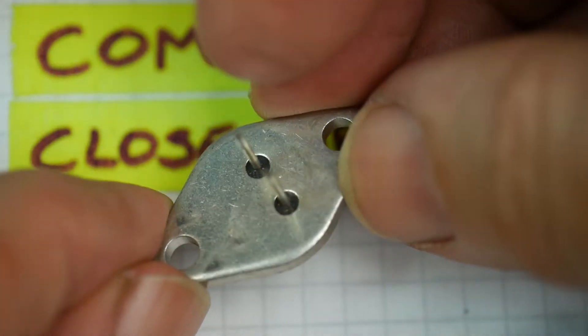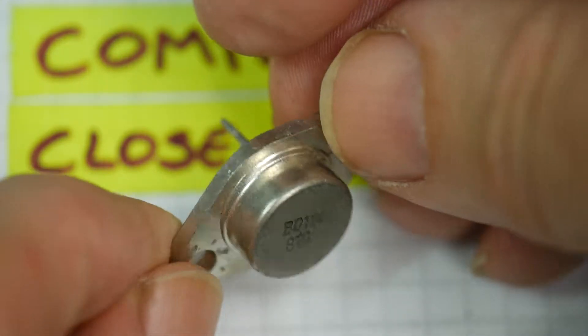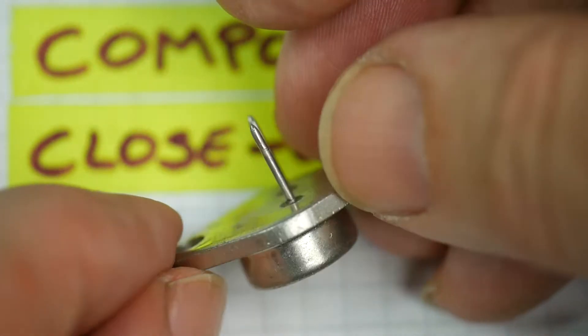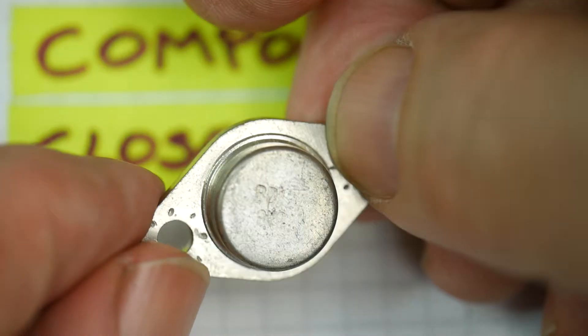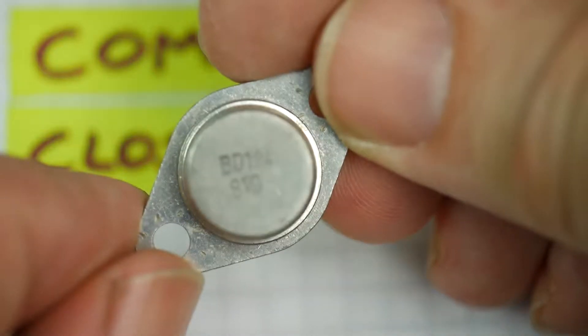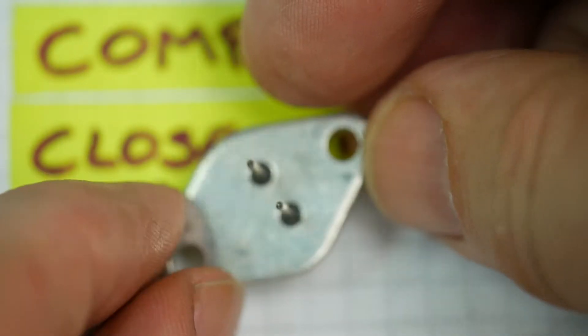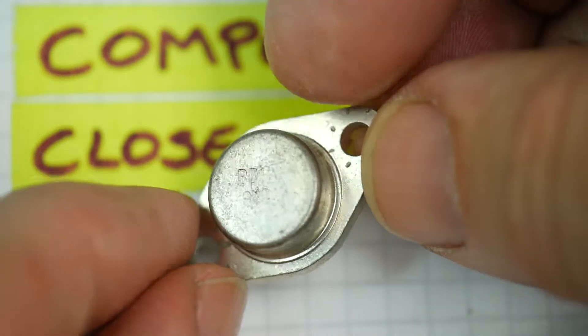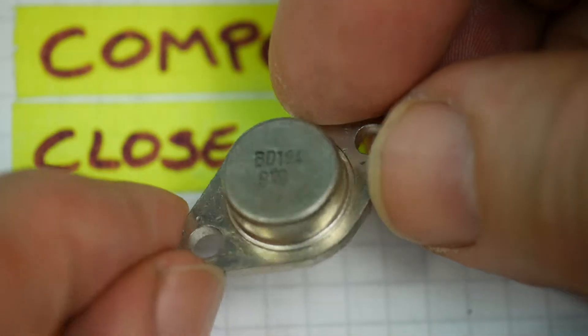Underneath it's very similar to the TO3. It's got the two bolting down mounting holes, the two little glass insulators, two pins. Again the canister or metal casing is collector and the pins are base and emitter. This one is a BD124 by the looks of it.